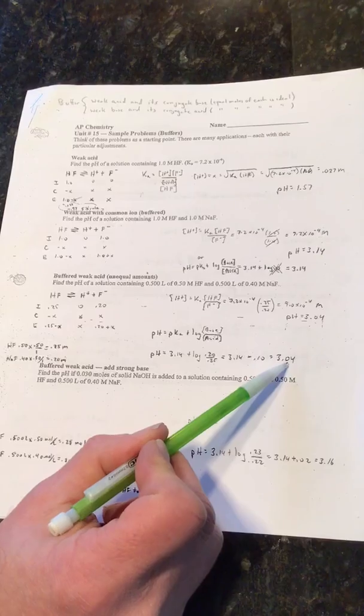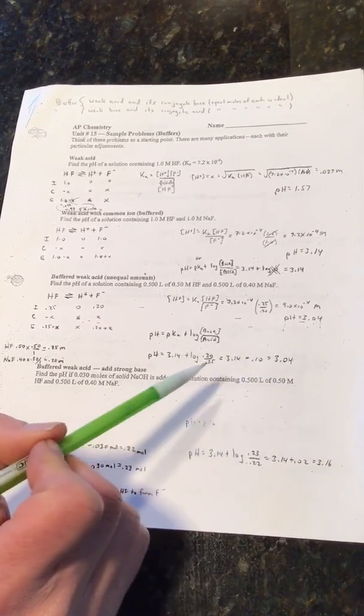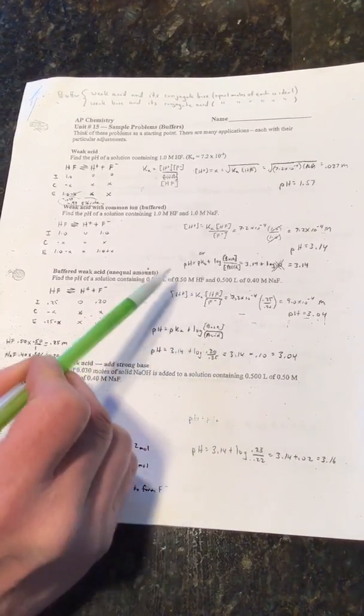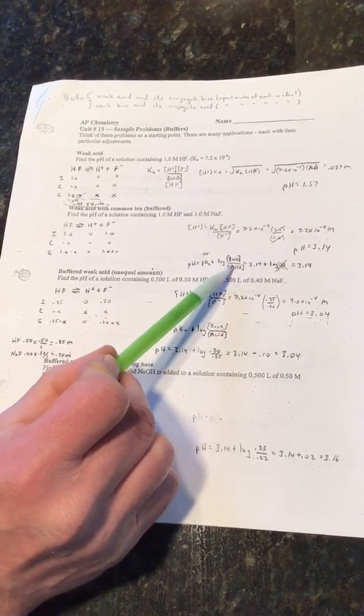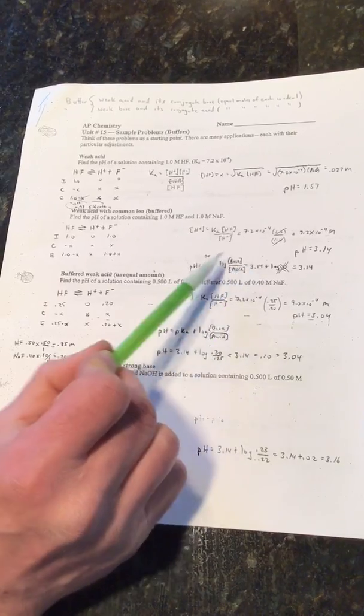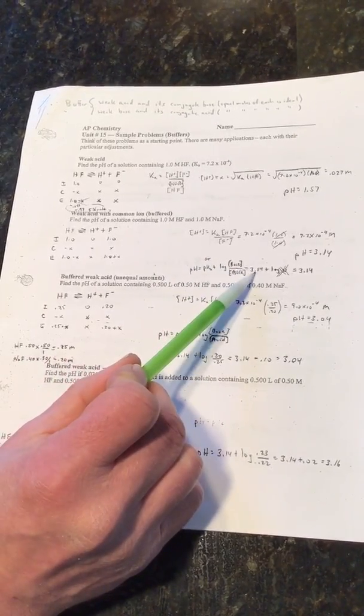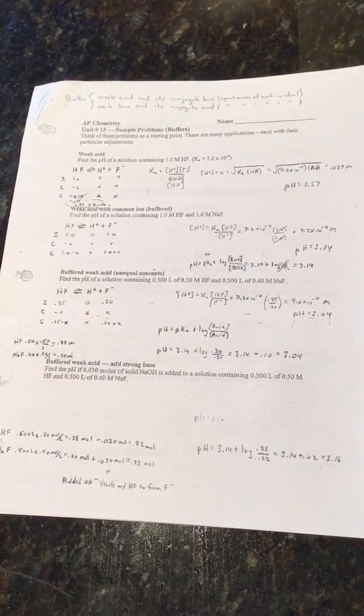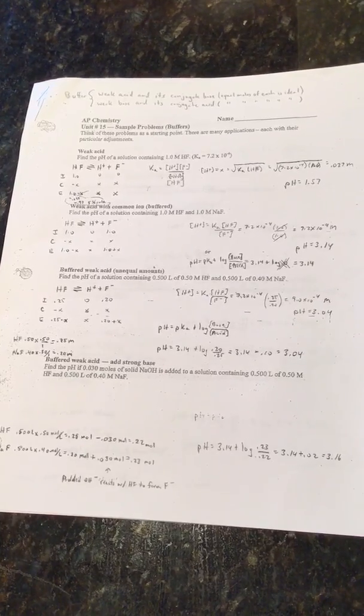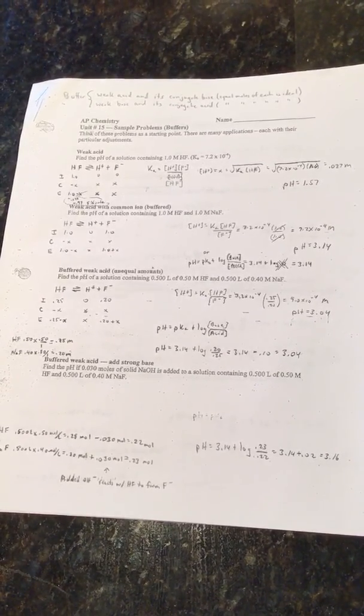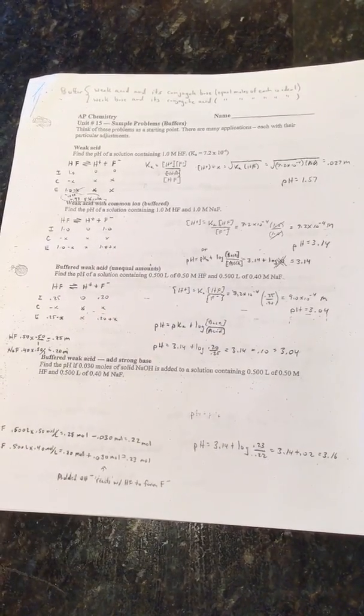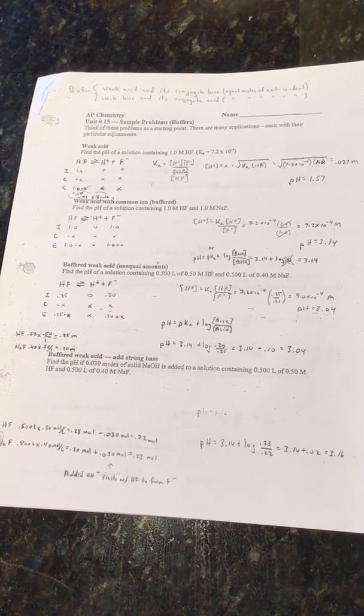In the problem before, where my acid and conjugate base were the same amounts, pH equals pKa. Since the base and the acid are the same, the log of 1 equals 0, and then the pH equals pKa, which is just 3.14. pH is the negative log of H+, pKa is the negative log of Ka. So all I'd have to do is take the Ka, take the negative log of that.